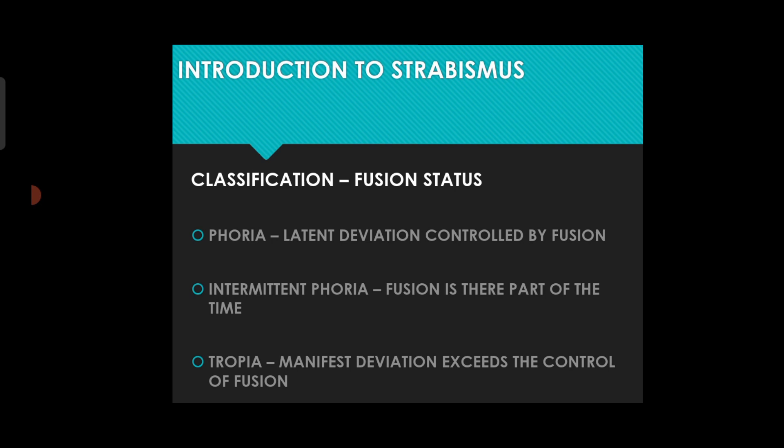Now, the classification of strabismus. Strabismus can be classified according to fusion status into phoria, intermittent phoria, and tropia. Phoria is a latent deviation controlled by fusion — there is some deviation but good fusional abilities can control it.